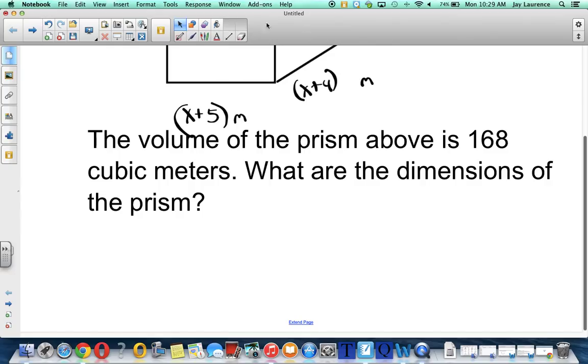Well, we know that to get volume, we normally take the area of the base. That's what capital B is, area of the base. The base would be a rectangle, x plus five times x plus four. And we'd multiply by the height, which in this case is three.